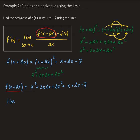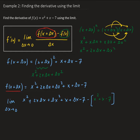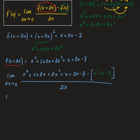So we have the limit as delta x goes to zero of: x squared plus 2x delta x plus delta x squared plus x plus delta x minus 7, minus the original function. So that's minus the quantity x squared plus x minus 7. Try to remember to put parentheses around the function so it reminds you to distribute the negative sign. And all of this is divided by delta x.